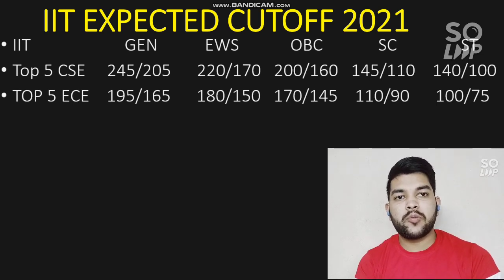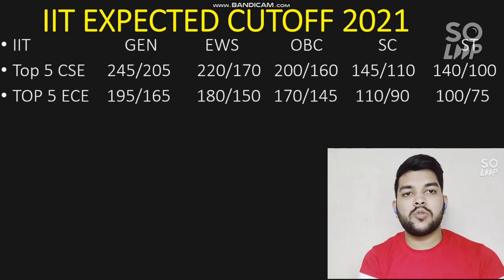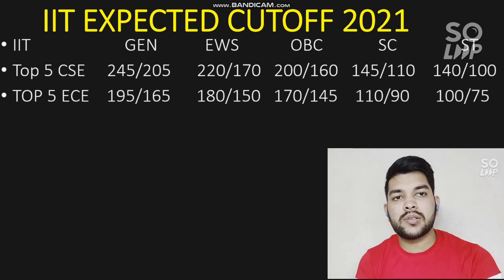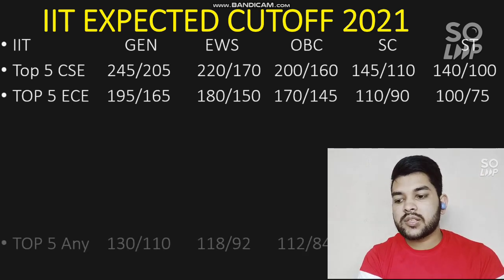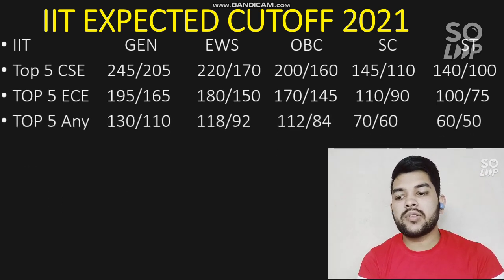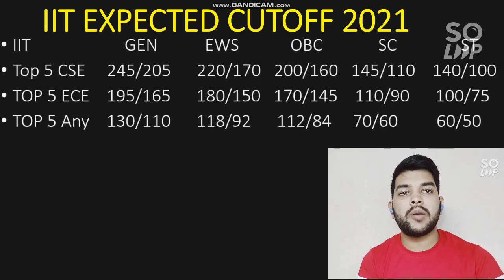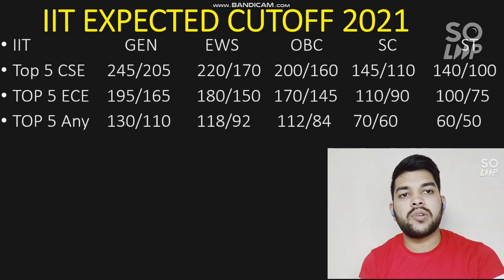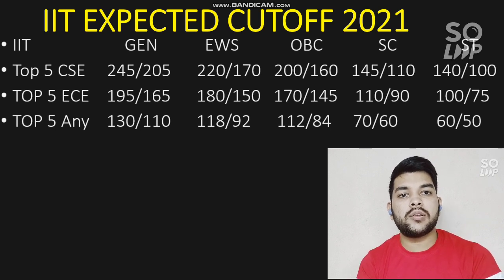I am providing this data by considering all the factors that affect the marks-versus-rank as well as rank-versus-college relationship, so you can trust this data. If you are scoring these marks you will surely get the corresponding college. For top 5 IIT with any branch — considering only the four-year B.Tech course, not dual degree — there are many branches available in the top 5 IITs, so if your marks are lower you can still target those IITs with other branches.